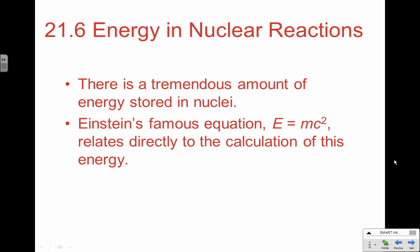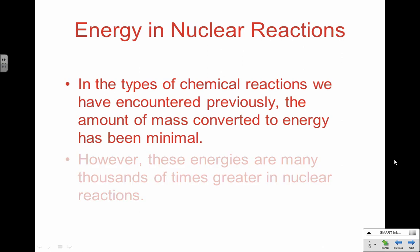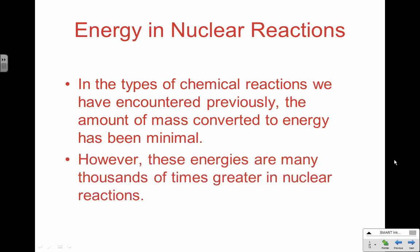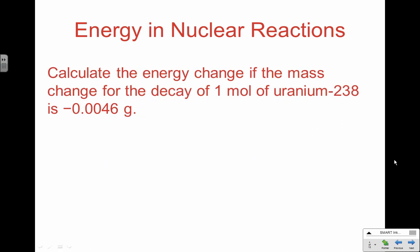E = mc² describes the relationship between energy and matter. When we destroy matter in nuclear reactions — unlike chemical and physical reactions — we're actually destroying matter, creating a tremendous amount of energy we can calculate through this equation. In typical chemical reactions, the law of conservation of mass says we're not destroying matter, so mass changes are very, very minimal. However, in a nuclear reaction there is a measurable change in mass, and we get tremendous amounts of energy compared to a typical chemical reaction. The energy per mole of a nuclear reaction is significantly higher than the energy per mole of an ordinary chemical reaction.